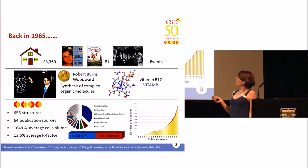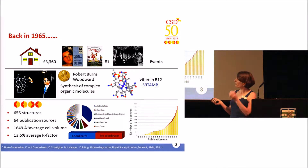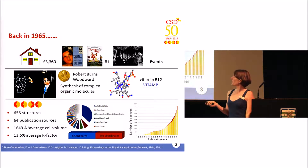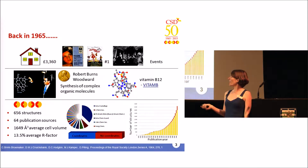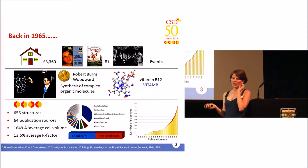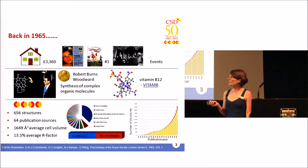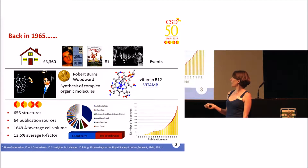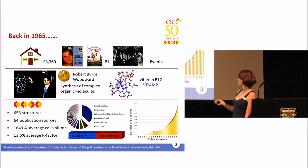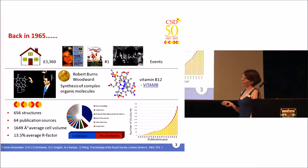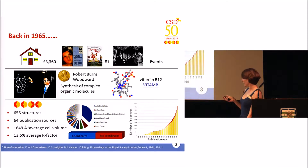In the world of crystallography in 1965, there were 656 structures published during the year from quite a diverse range of 64 publication sources. The predominant place to publish crystal structures was Acta Crystallographica. The average cell volume was 1,649 ångströms cubed, and the average R factor of the structures published during that year was 13.5%.